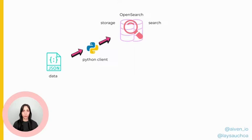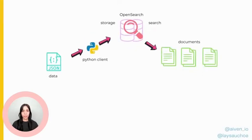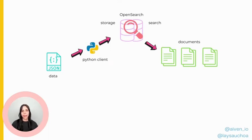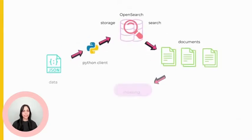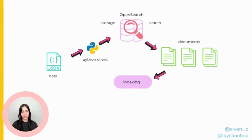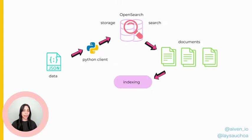When we send data to OpenSearch, it is organized into documents. Documents are units of data sent to a cluster — they are JSON objects containing whatever data you designed to send. Documents can be indexed. Indices, in plural, refers to a collection of documents with similar characteristics that are logically related. Indices store documents in data structures corresponding to the data type of the fields. They are like a database table in a relational database.